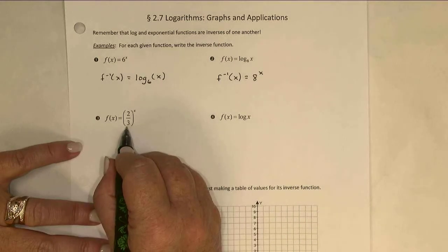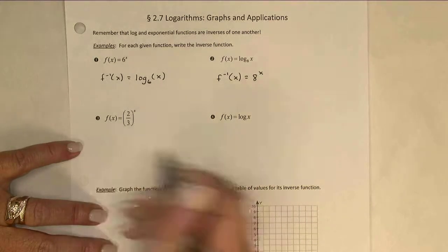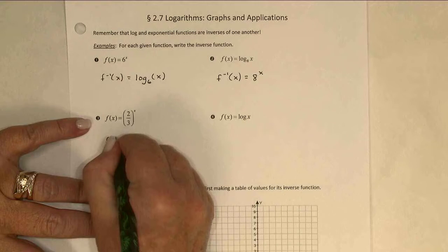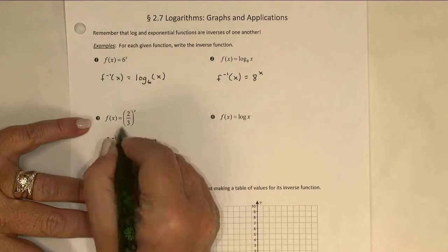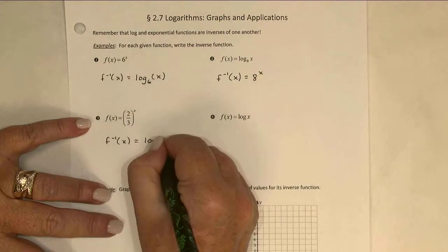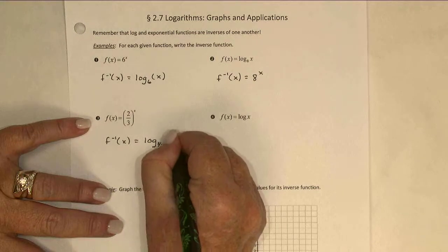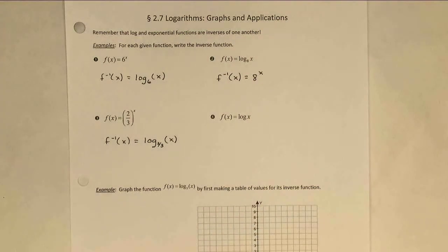In number 3, I have an exponential function. Inverse is a logarithm. The base is 2 thirds. So the logarithm base 2 thirds of x.